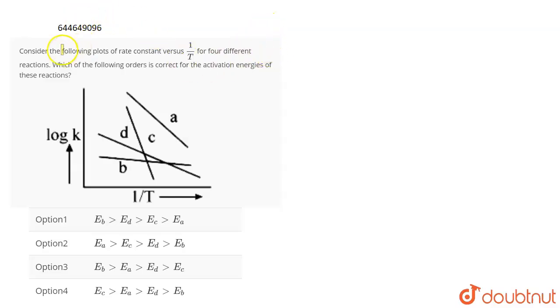The question is, consider the following plots of the rate constant versus 1 by T, which is the temperature for 4 different reactions. Which of the following orders is correct for the activation energies of these reactions?